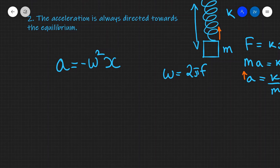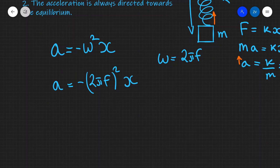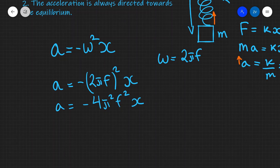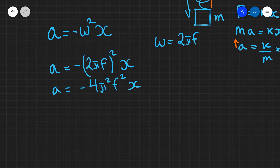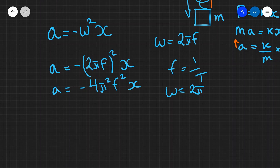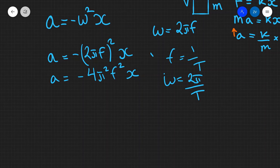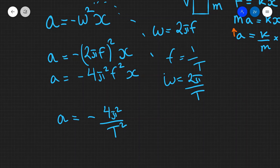Because omega equals 2πf, we can write this equation in a few different ways. Substituting directly, the acceleration equals minus (2πf)² times displacement, which equals minus 4π²f² times x. Additionally, because frequency is 1/T, omega is 2π/T, so another form of the equation is a equals minus (4π²/T²) times displacement.